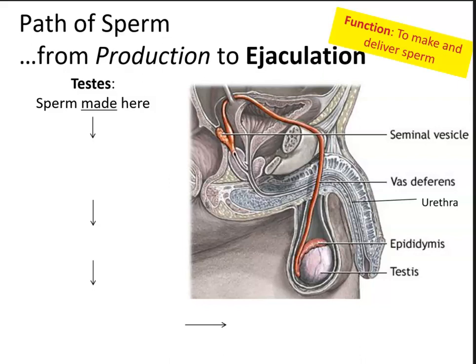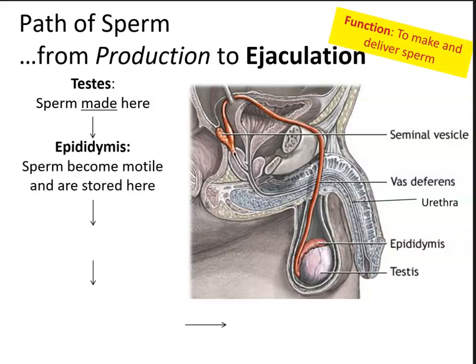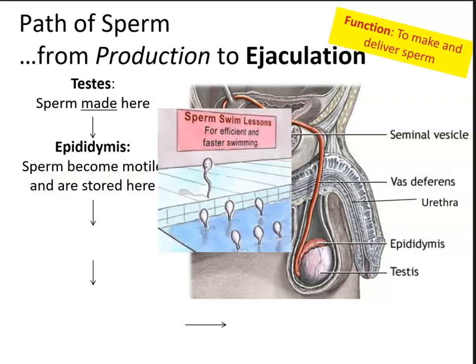We start at the testes, the male gonads, where sperm is made. Specifically, the structures are called the seminiferous tubules. From the seminiferous tubules, sperm will travel to the next structure, the epididymis (E-P-I-D-I-D-Y-M-I-S). This is where sperm are stored and matured — sperm become motile here. Think of it as sperm swim lessons, where they learn to become more efficient and faster swimmers.